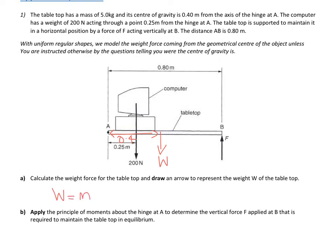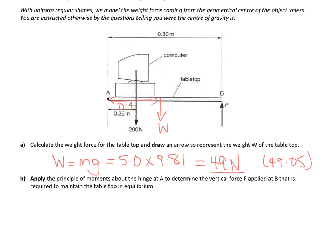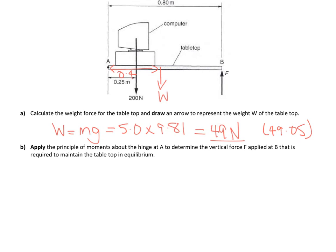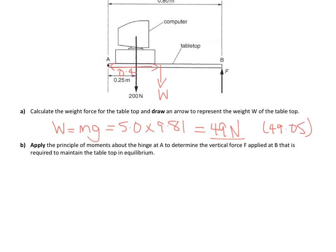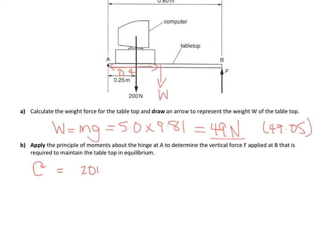So we want first to calculate the weight force. Weight force is mass times gravity, so it's 5.0 times 9.81, which is equal to 49 Newtons to two significant figures. It's actually 49.05 because we'll use that later on. So if we're taking moments about A, we need to show that the total moments clockwise equal the total moments anticlockwise to be in equilibrium. Going clockwise, we've got this force here which is going to make it rotate that way. We've got this force there, again, going to make it rotate that way. So the total moment is going to be 200 times 0.25 because that's the perpendicular distance, and it's going to be 49.05 times by 0.40.